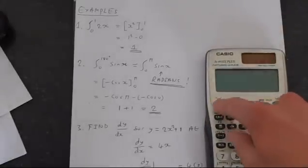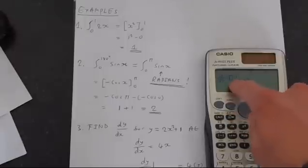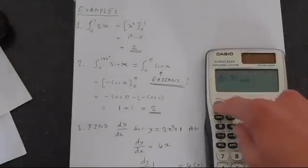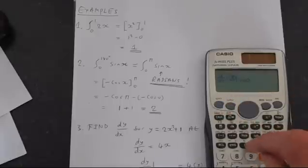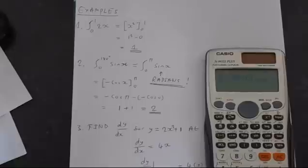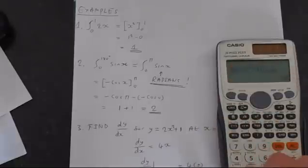So we've got the dy dx here. So in here we put our function, which is 2 alpha x squared plus 1. We want x equals 5. So put that in, and we get 20.